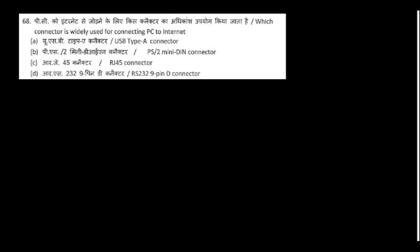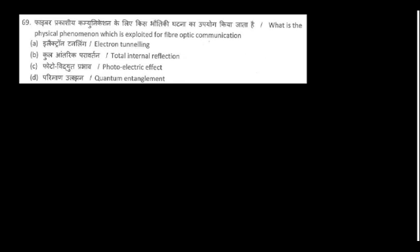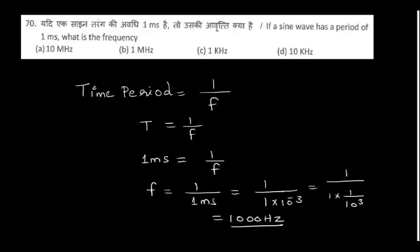Which connector is widely used for connecting a PC to the internet? That is the RJ45 connector. The physical phenomenon exploited in fiber optic communication is total internal reflection. If a sine wave has a period of one millisecond, what is the frequency? That is one kilohertz.